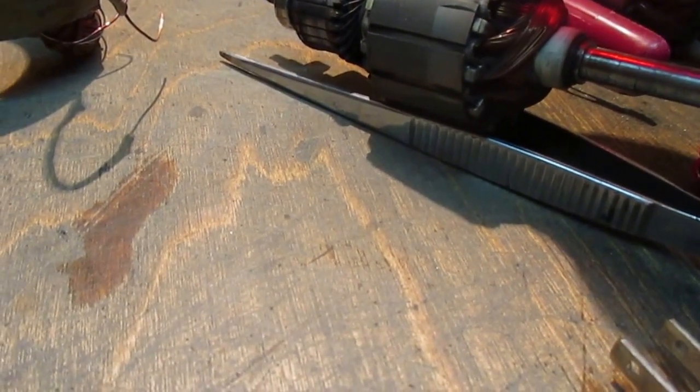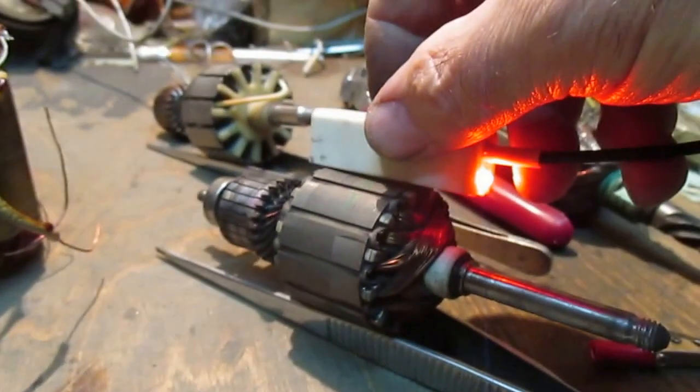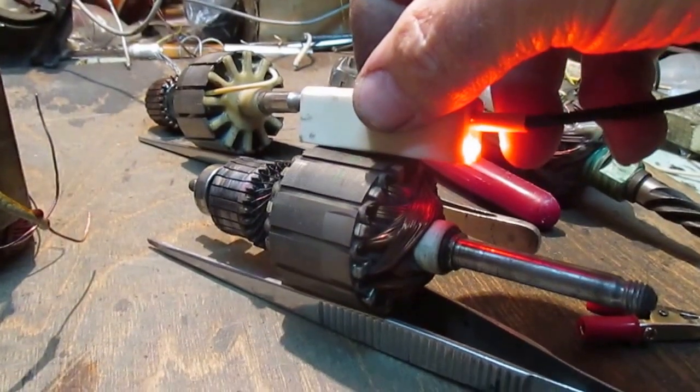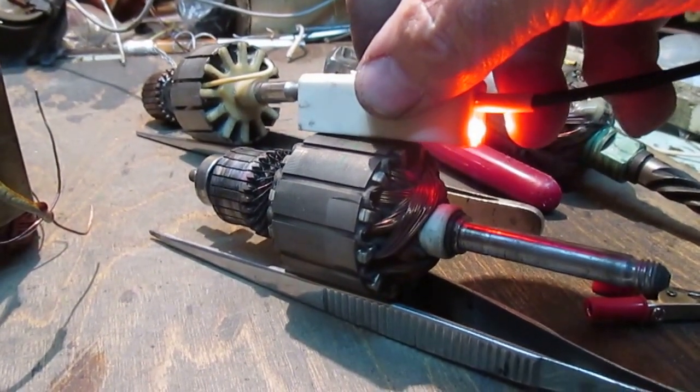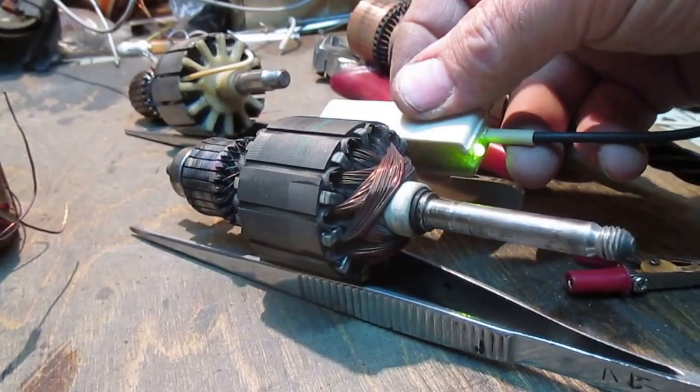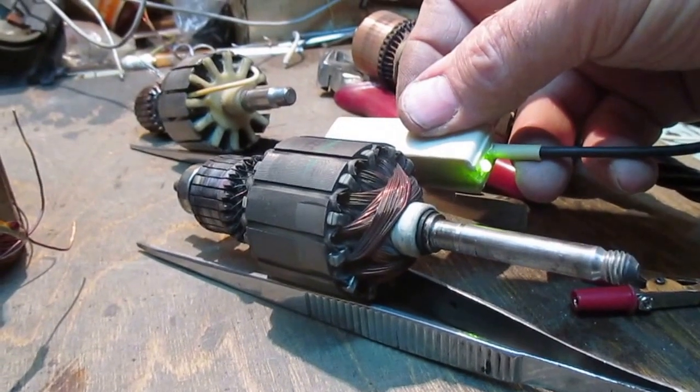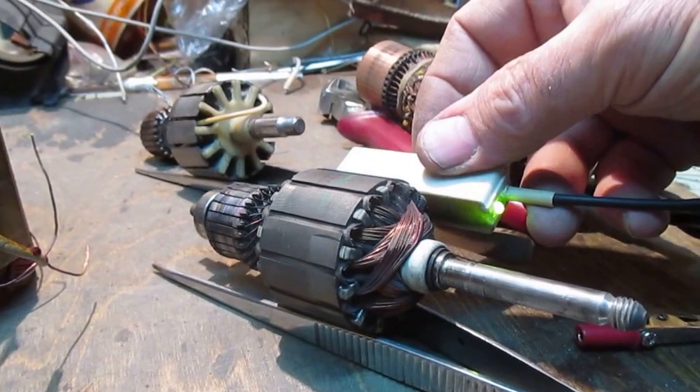See, this slot shows red. It means here short socket. Next slot 2. Here slot green color. It means here no short socket.